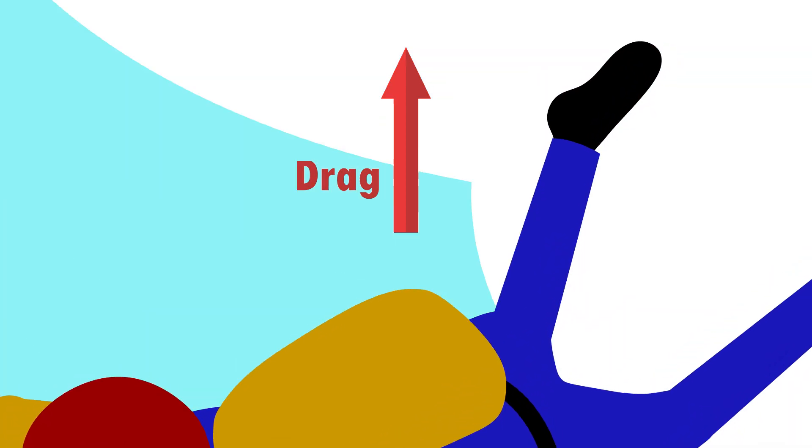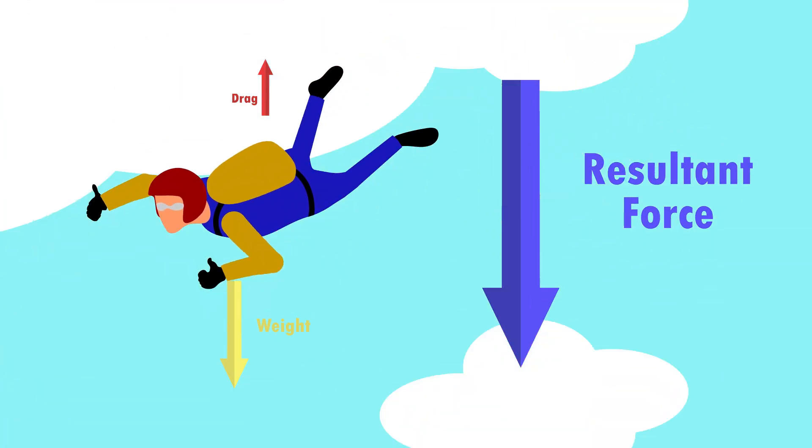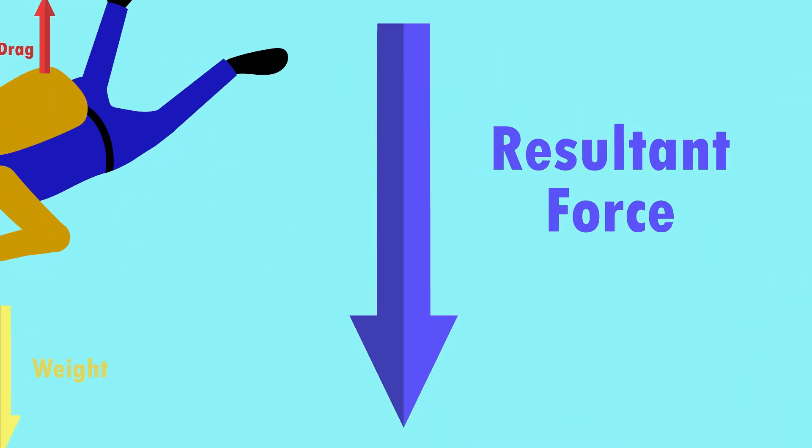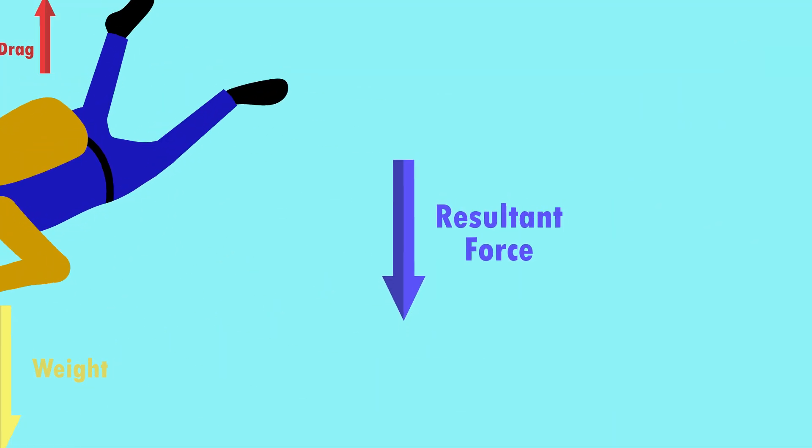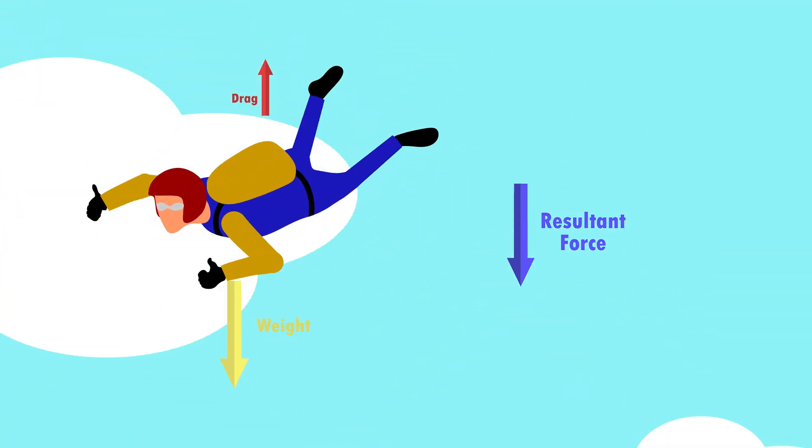As they speed up, drag, shown by the red arrow, starts to act in the opposite direction to motion. So the resultant force decreases. So by Newton's second law, the acceleration also decreases.